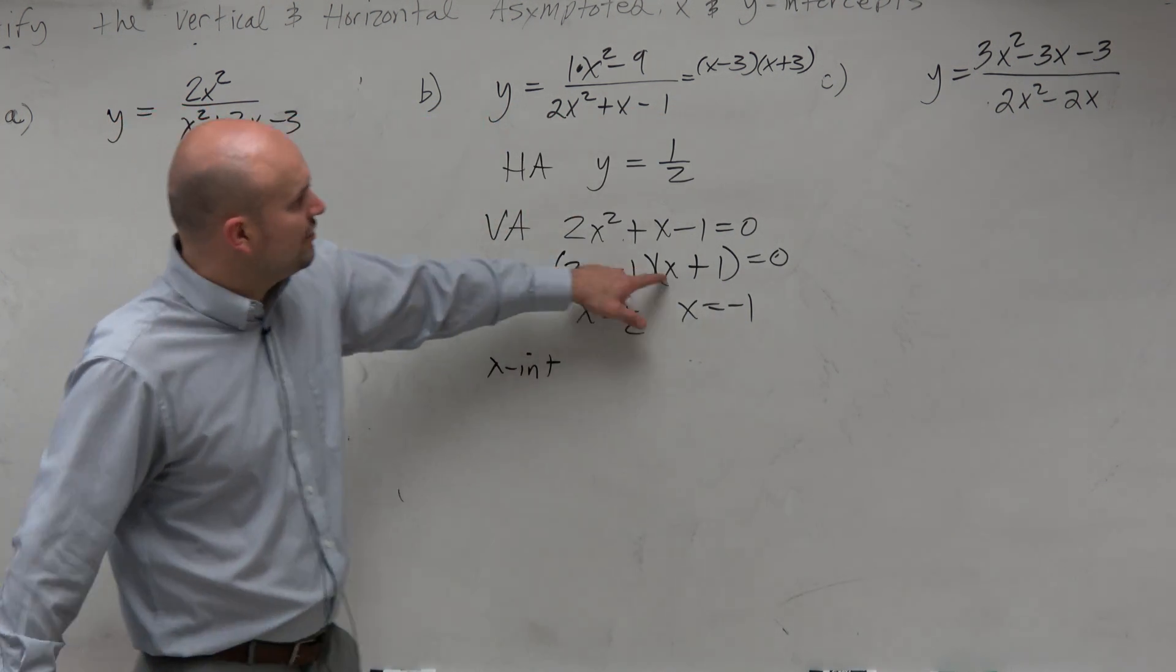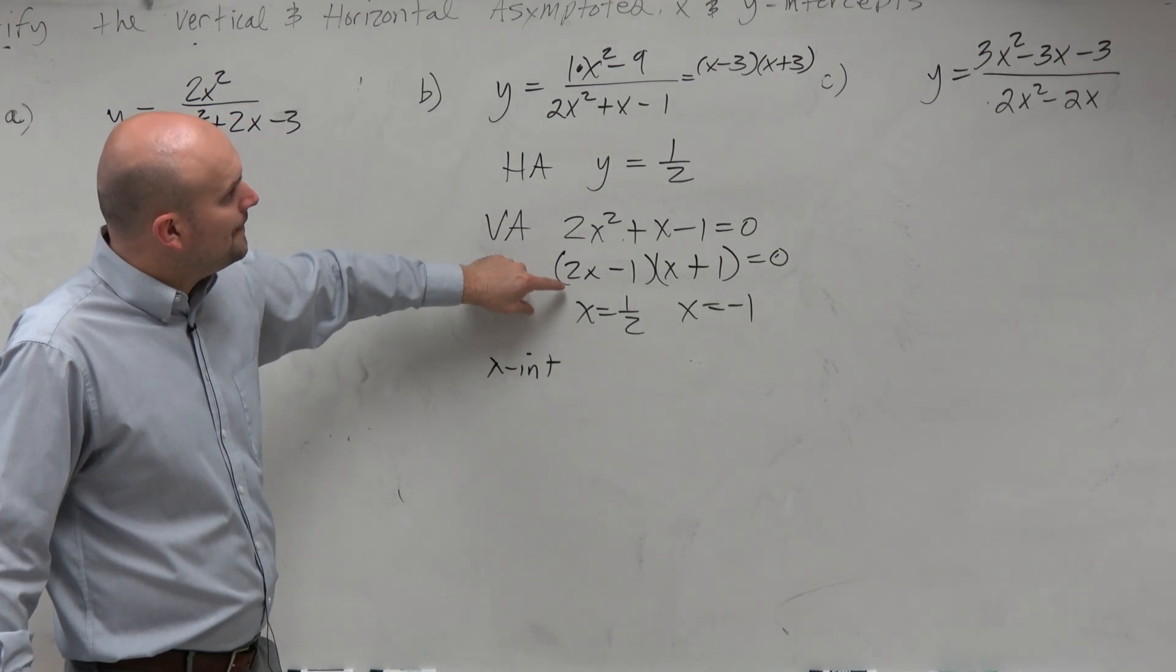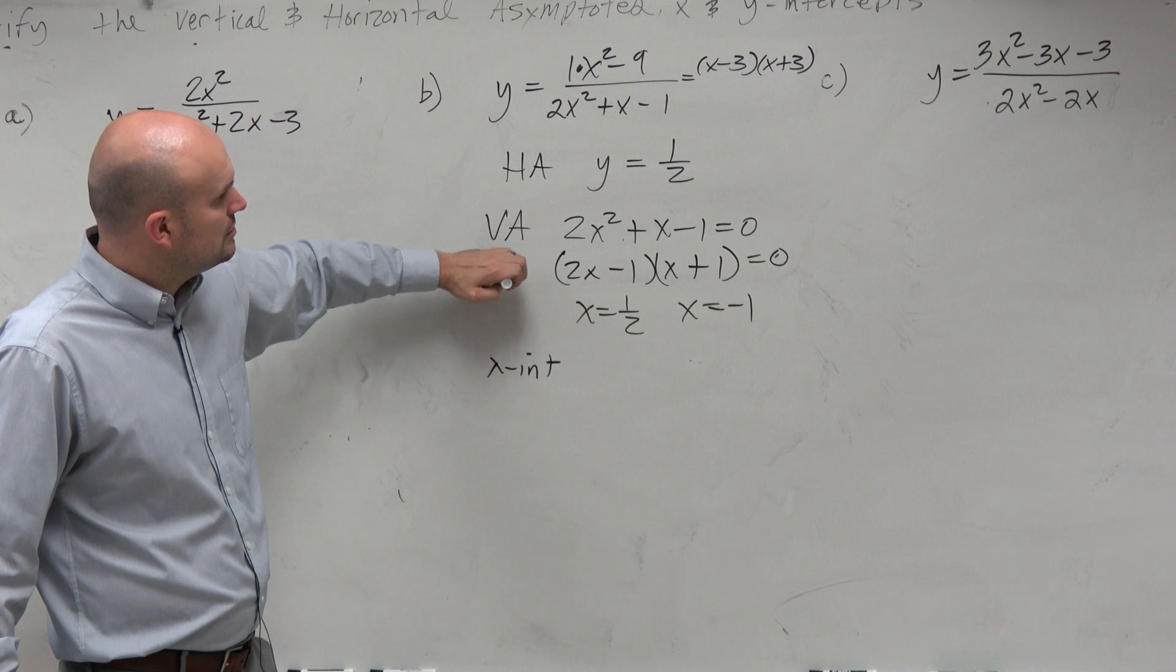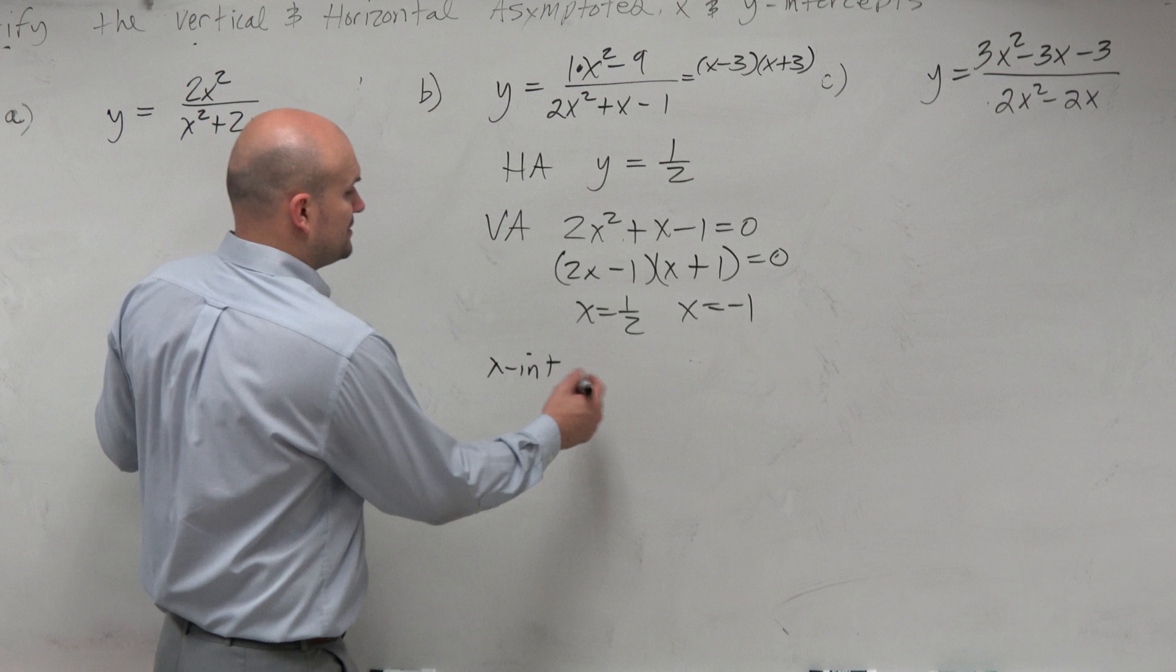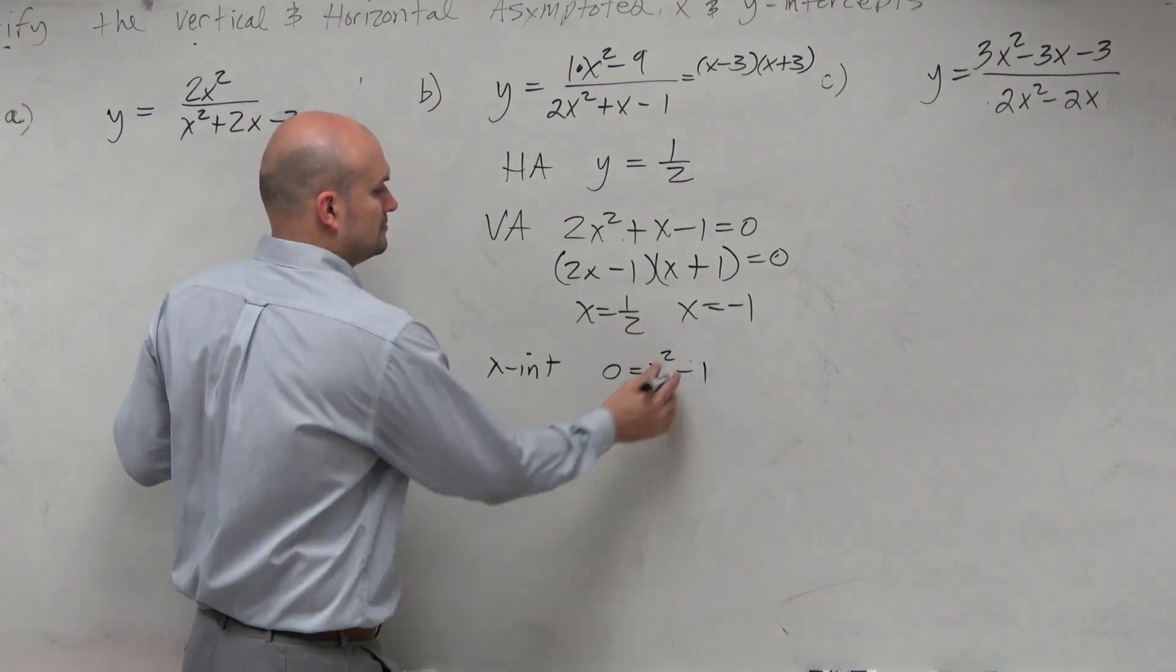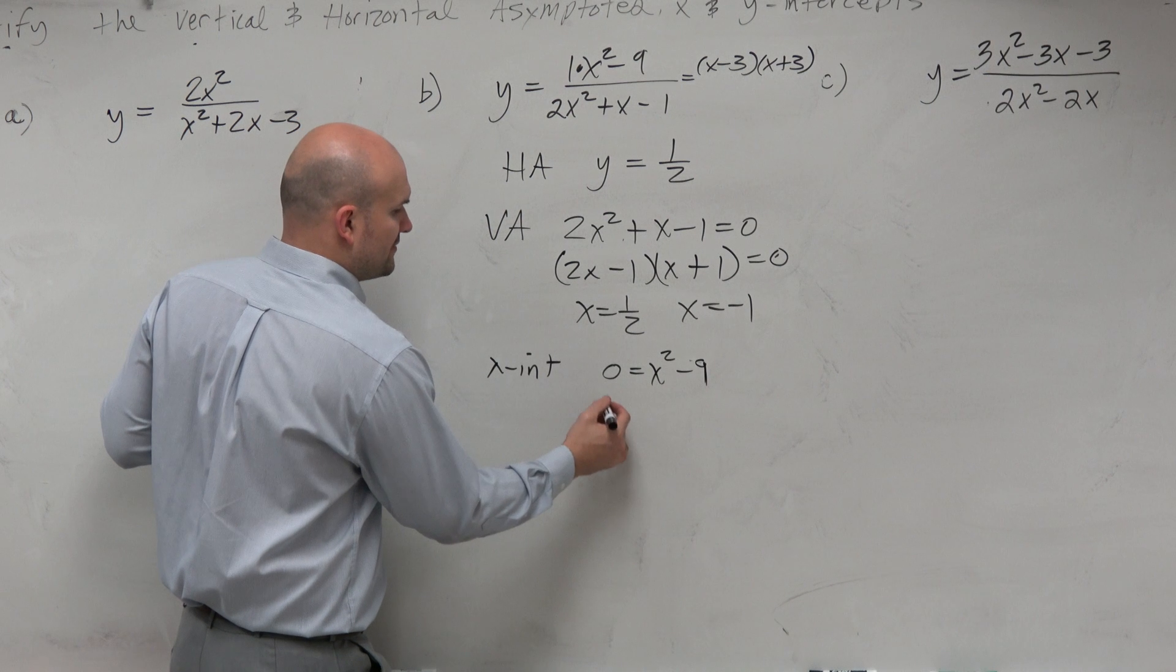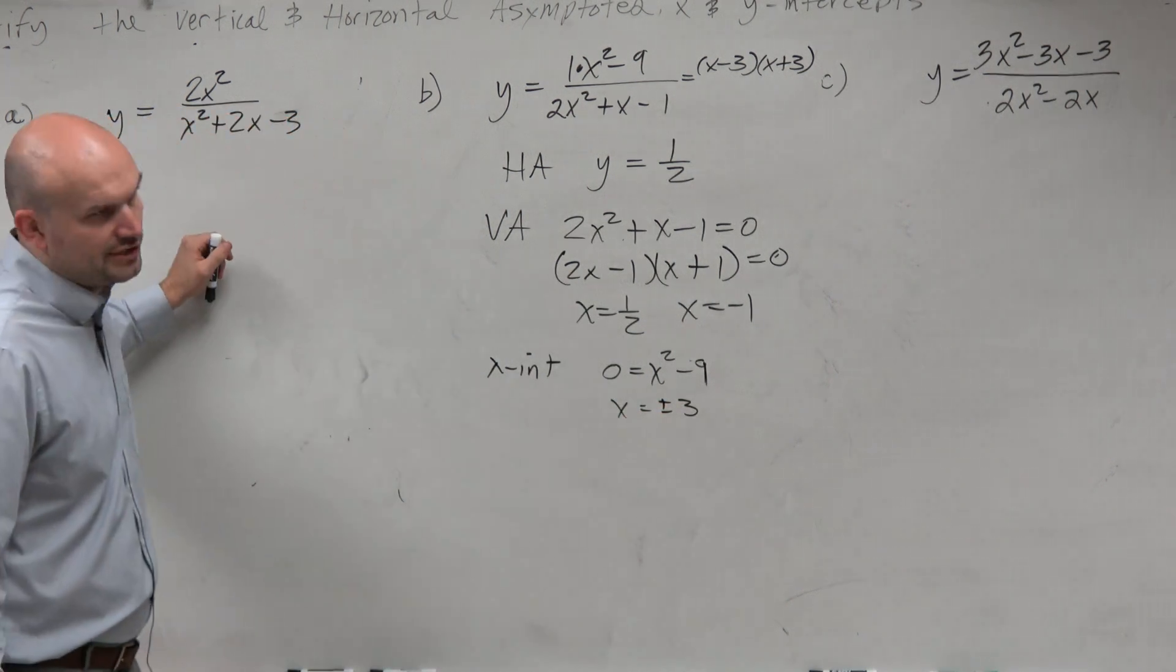Again, notice that these don't factor out with these. So there's no holes. x-intercept. Set the numerator equal to 0. So therefore, x is equal to plus or minus 3. You could use the square root method, or you could use factoring.